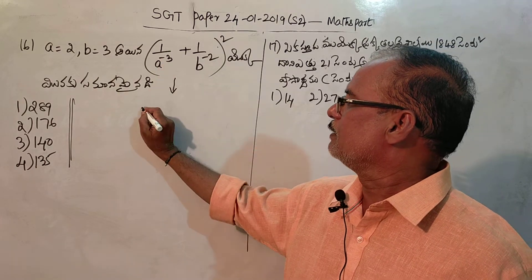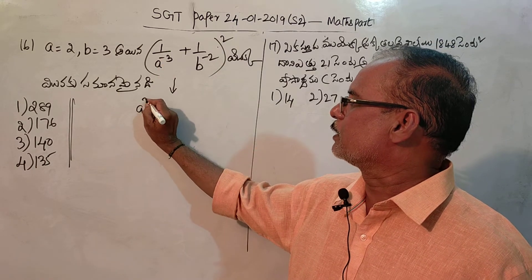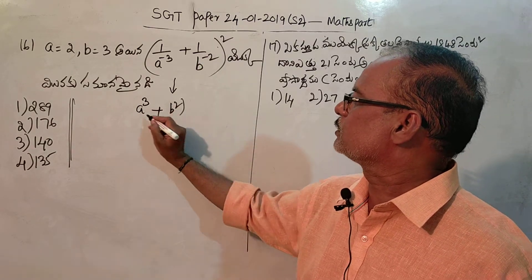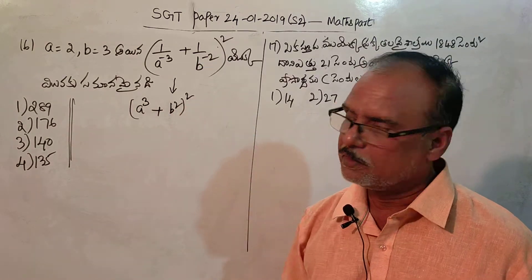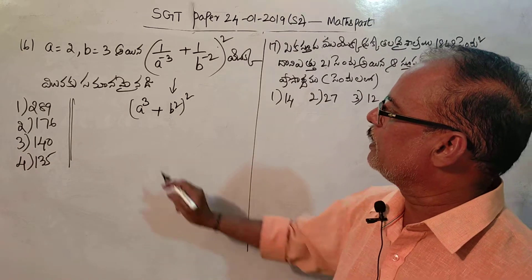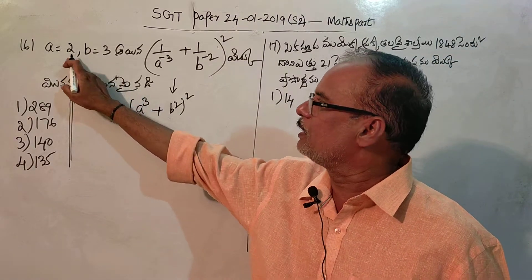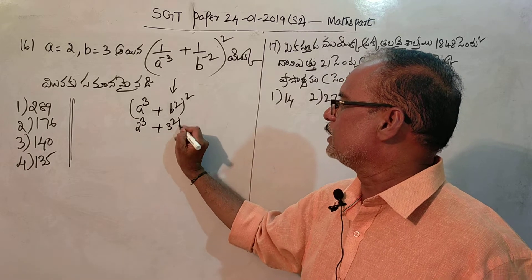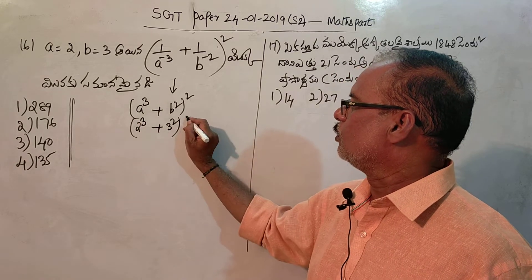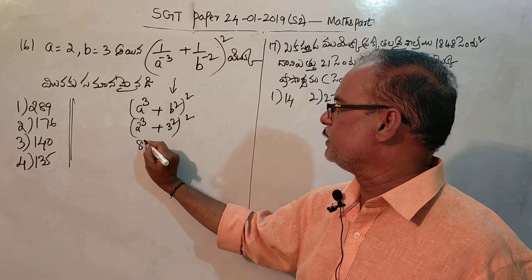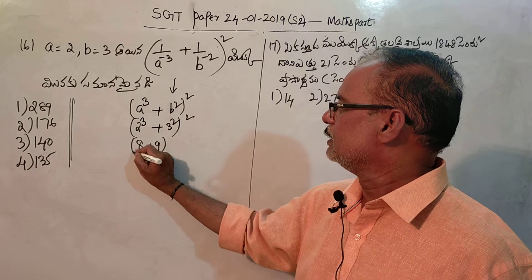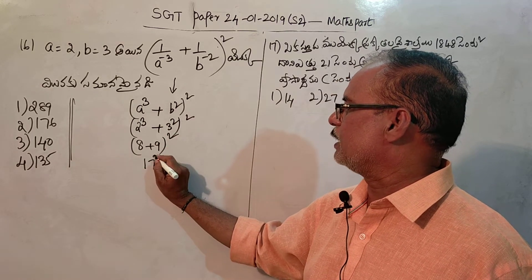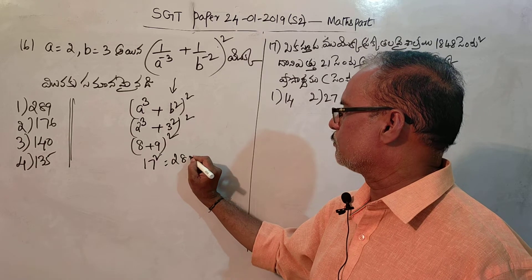Minus 3 equals to y equals to 1. Minus equals to y equals to b. A is equal to 2. B is equal to 3. 2 is equal to 2. 2 is equal to 3. 3 is equal to 9. 1 is equal to 9. 1 is equal to 17. 2 is equal to 5.